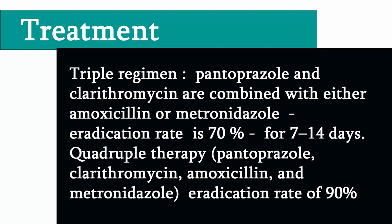First-line treatment of peptic ulcer disease is triple regimen, in which pantoprazole and clarithromycin are combined with amoxicillin or metronidazole. The eradication rate is 70%, and this regimen can be given for 7–14 days. The rate of eradication can be increased by doubling the dose of pantoprazole or increasing the duration of treatment up to 14 days. Quadruple therapy — pantoprazole, clarithromycin, amoxicillin, and metronidazole — can also be used and achieves an eradication rate of 90%.